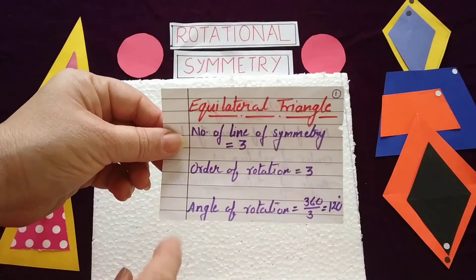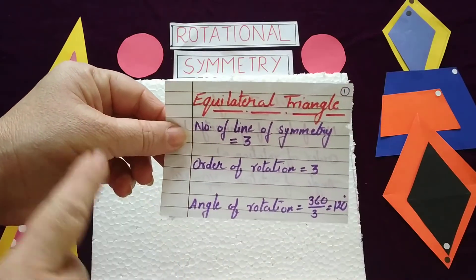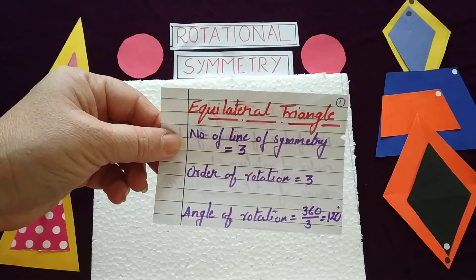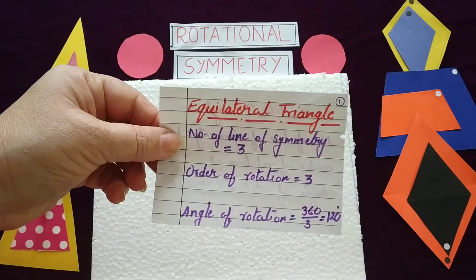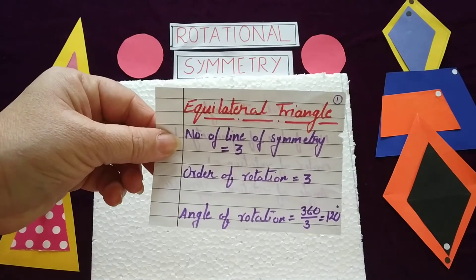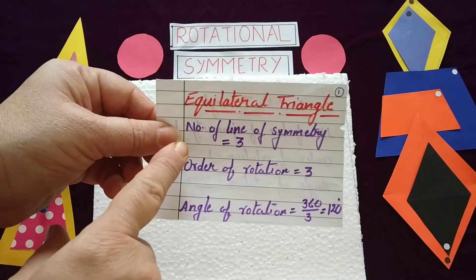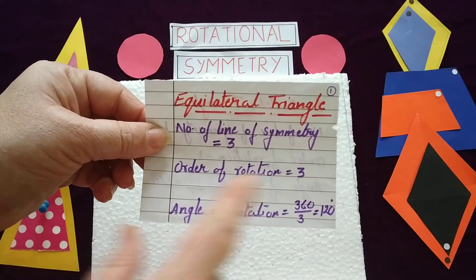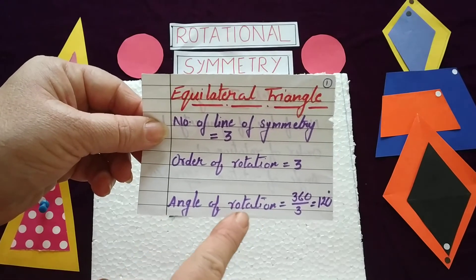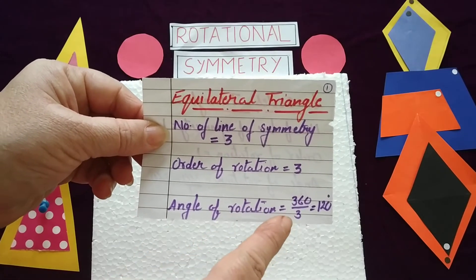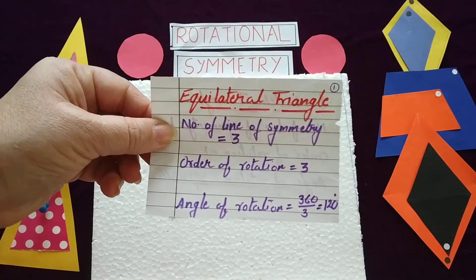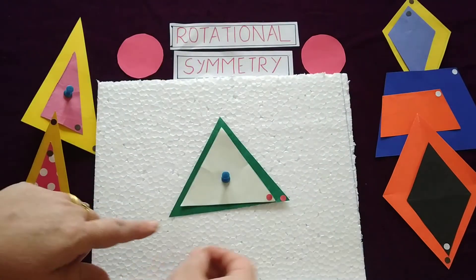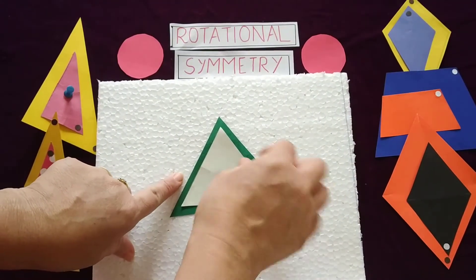So for the equilateral triangle: the number of lines of symmetry — you can fold the figure to find out, I have already conducted a video for that — is 3. Order of rotation is 3. Angle of rotation: 360 degrees divided by 3 gives you 120 degrees. So for an equilateral triangle, the angle of rotation is 120 degrees.